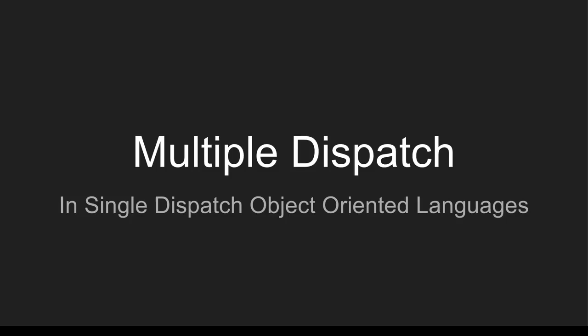This video is going to be about a concept called multiple dispatch, and I want to talk about this from the perspective of single dispatch object-oriented languages. These are the ones that you see most of the time — like Java, C#, and C++ — the big kahunas all seem to use this one paradigm, and implementing multiple dispatch in these languages can be very tricky as it kind of defies the basic principles on which these languages are based.